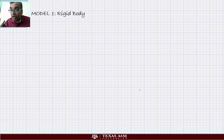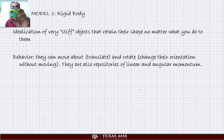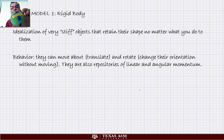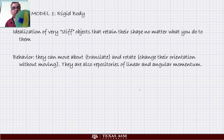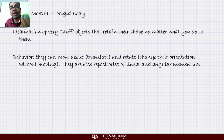The first model is the rigid body. There is no real rigid body — what it represents is very stiff objects that retain their shape no matter what you do to them. A rigid body can move about in three translational ways: swaying (side to side), heaving (up and down), and surging (forward and backward). It also has three rotational ways: pitching, yaw, and roll. So there are six different ways in which it can move — three translational and three rotational. Rigid bodies are also repositories of linear momentum and angular momentum.